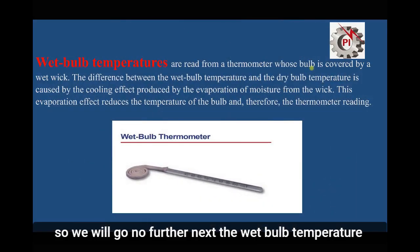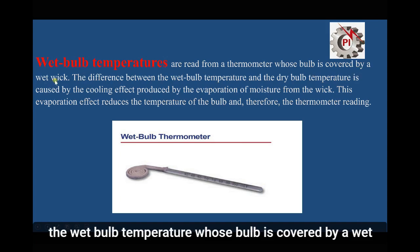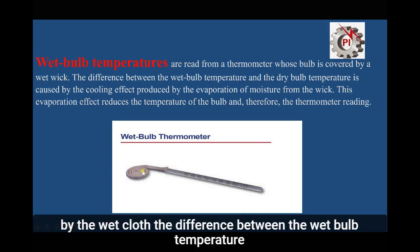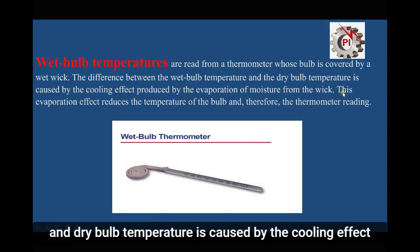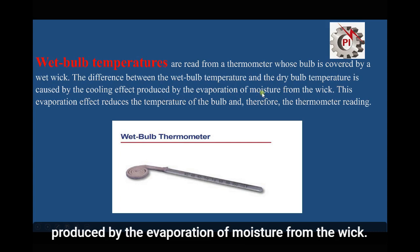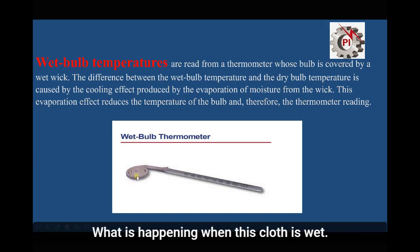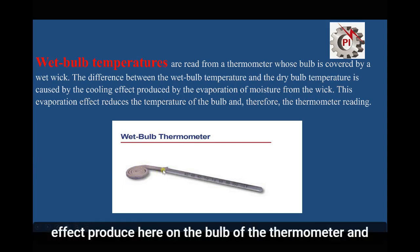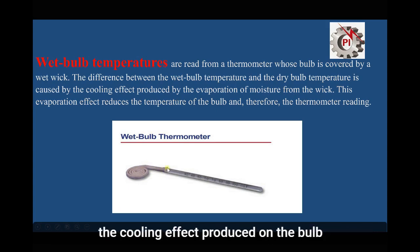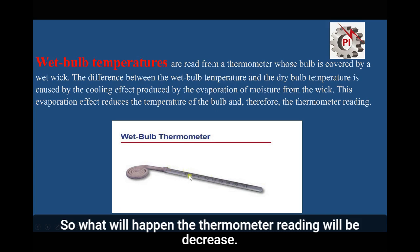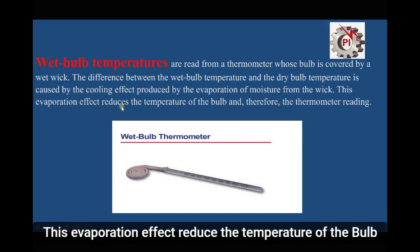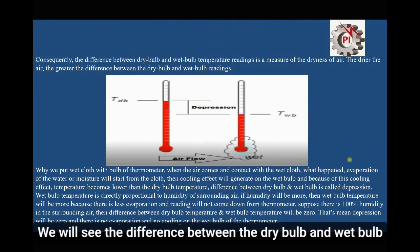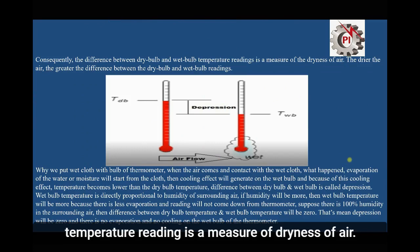The wet bulb temperature uses a thermometer whose bulb is covered by a wet wick — a wet cloth. The difference between the wet bulb temperature and dry bulb temperature is caused by the cooling effect produced by the evaporation of moisture from the wick. When the cloth is wet and evaporation starts, a cooling effect is produced on the bulb of the thermometer, which reduces the thermometer reading.